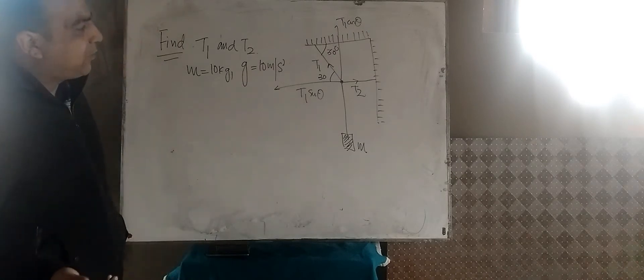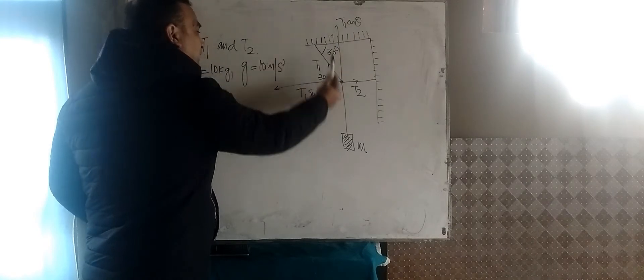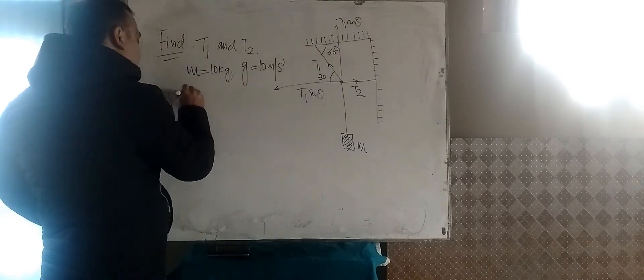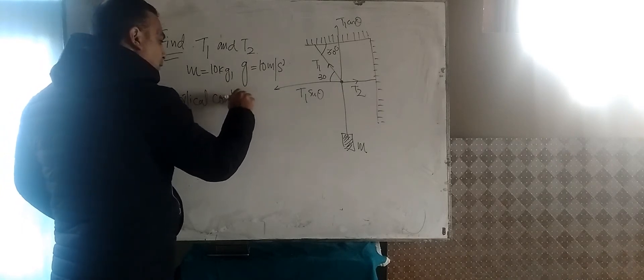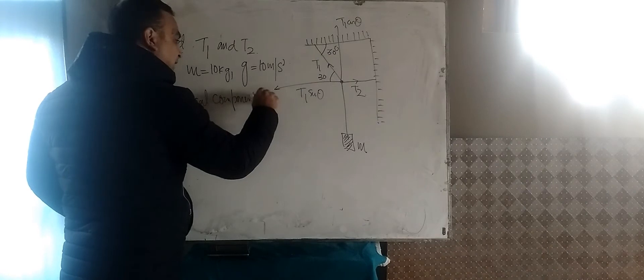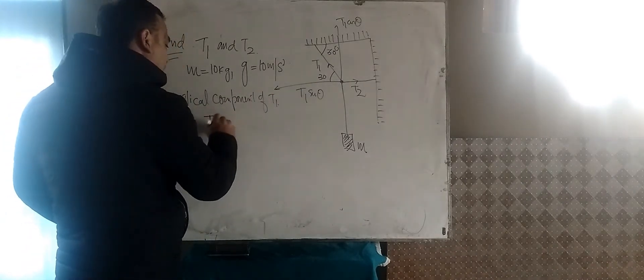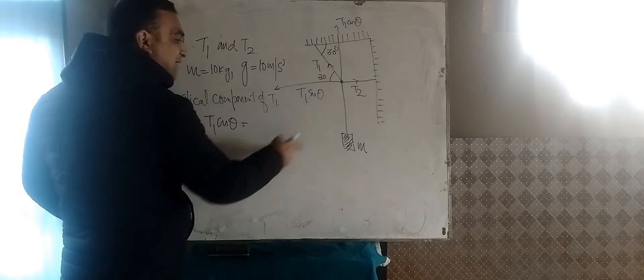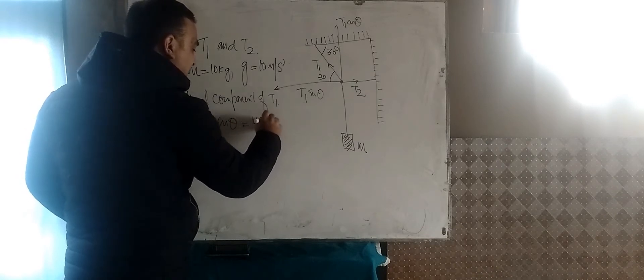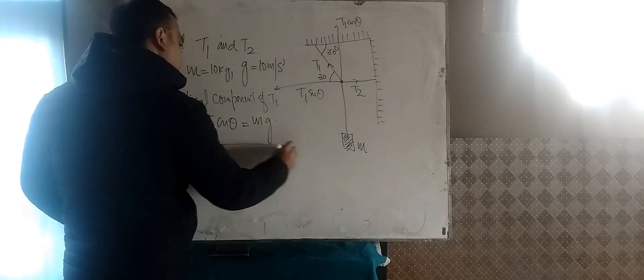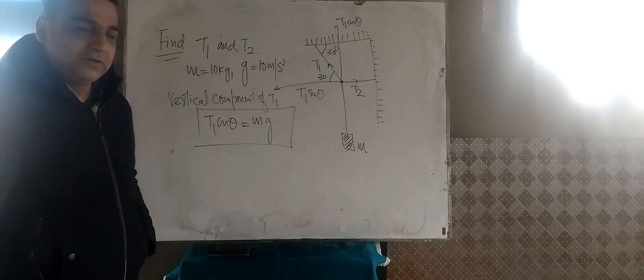The things are quite simple now. You can see that this vertical component of T1, that is T1 cos theta, it is balanced by the gravitational force acting on this body. So that must be mg. This will be the first equation that we can write down for this problem.